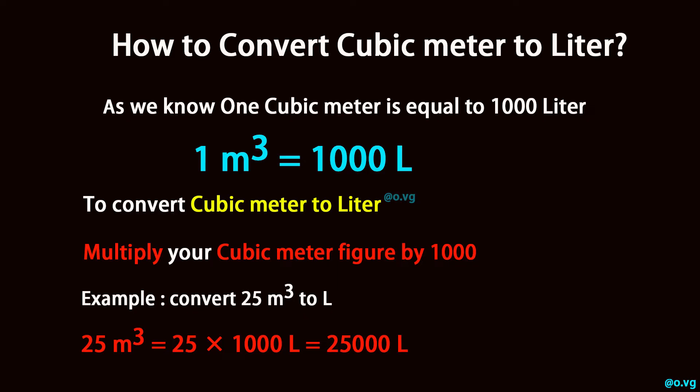Example: convert 25 cubic meters to liters. 25 cubic meters is equal to 25 times 1,000 L, which equals 25,000 L.